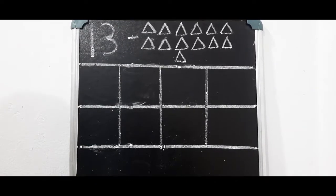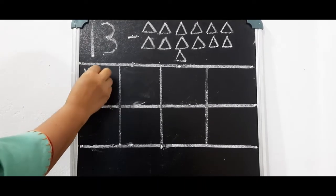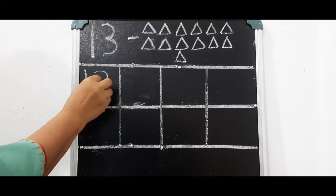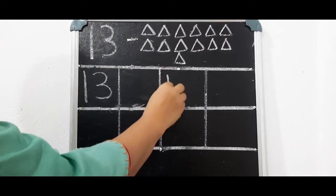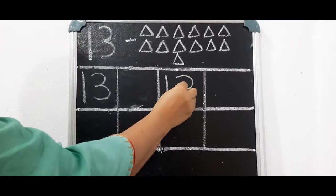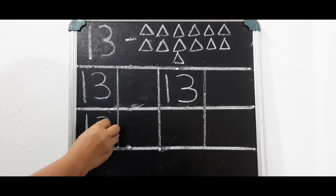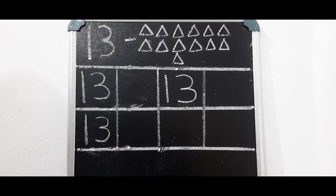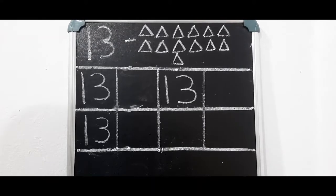Now let's learn to write number 13: 1, 3 — 13. Okay children, you have to say and write. While writing the number 13 you have to say 1, 3 — 13. Please practice in your square line notebook.